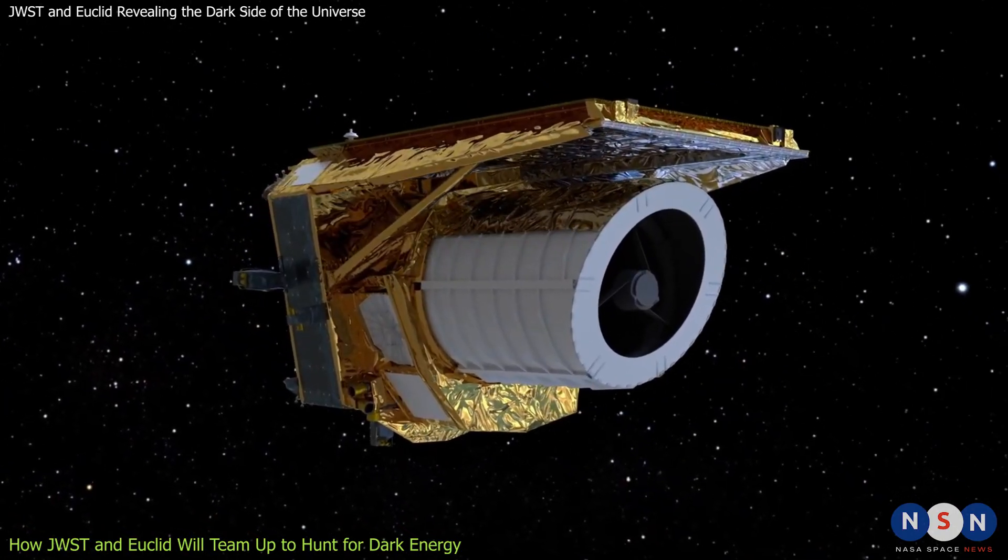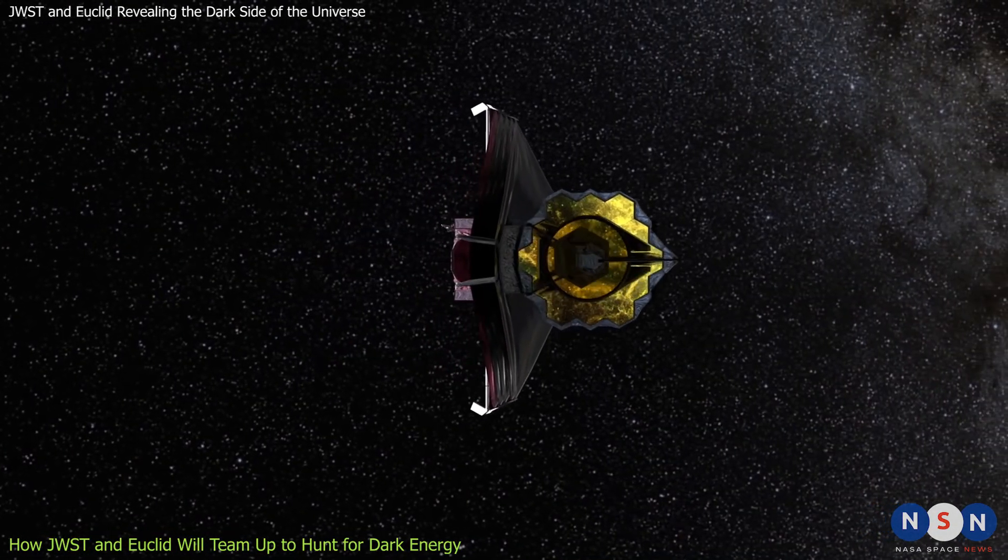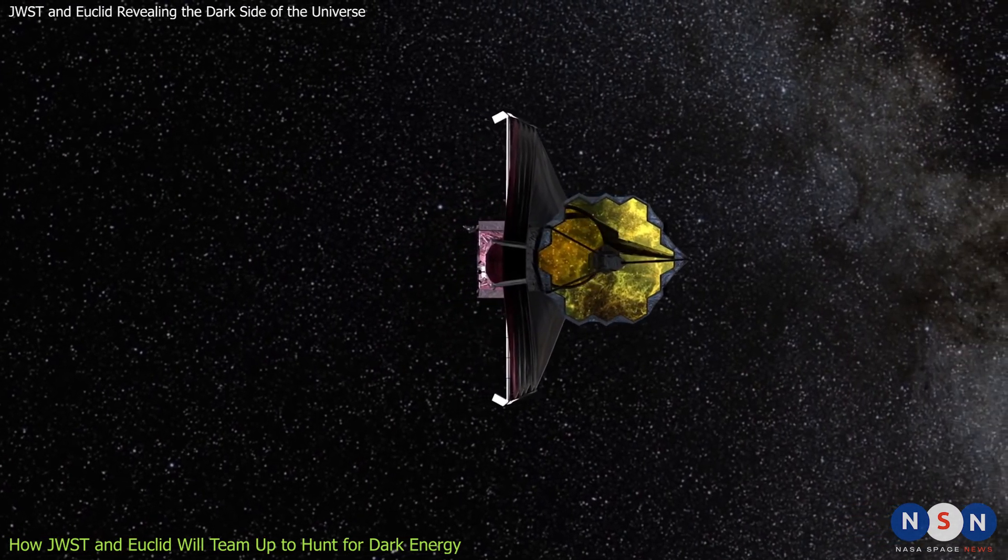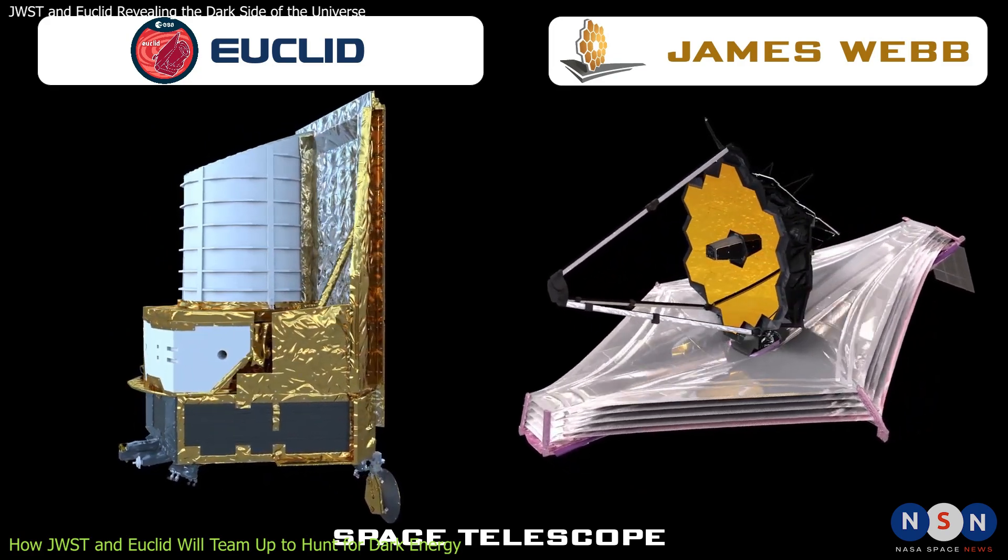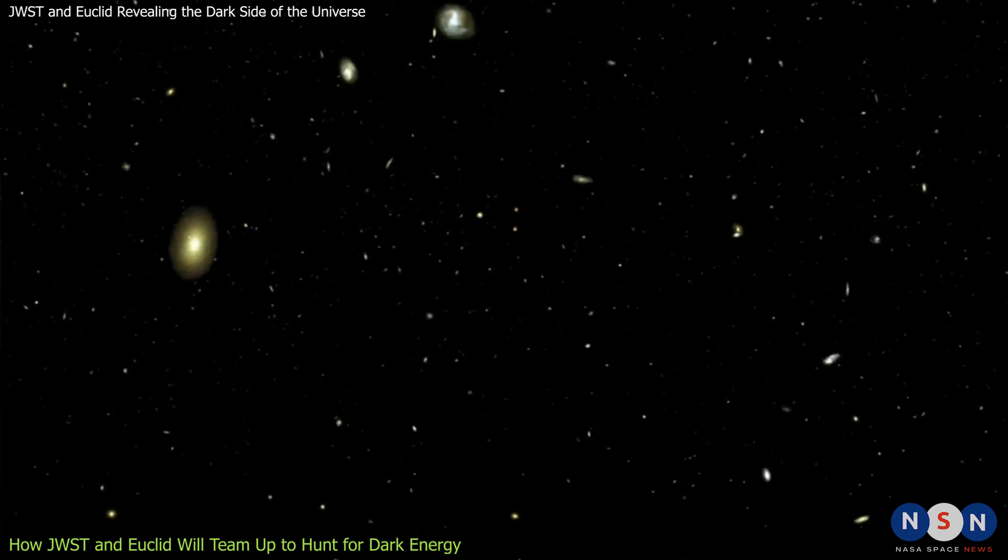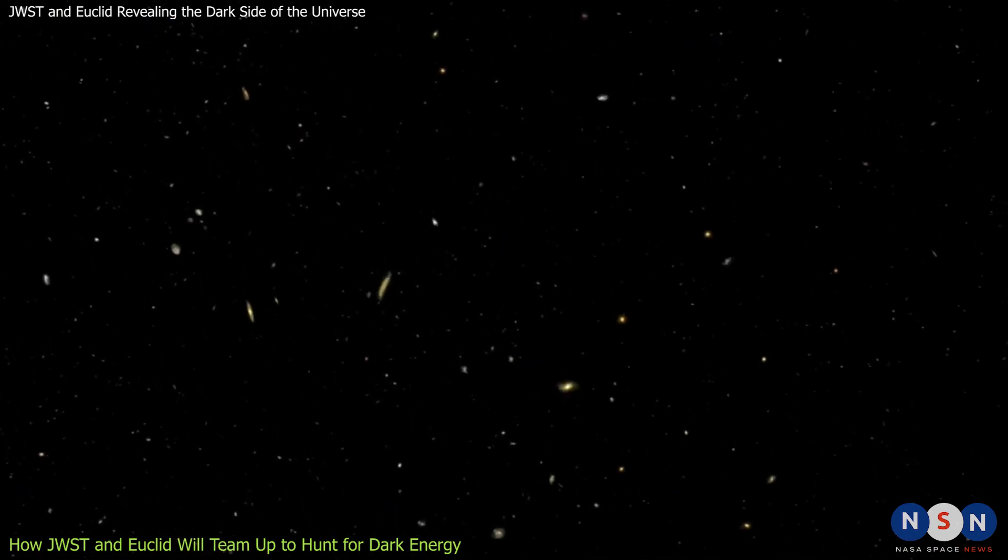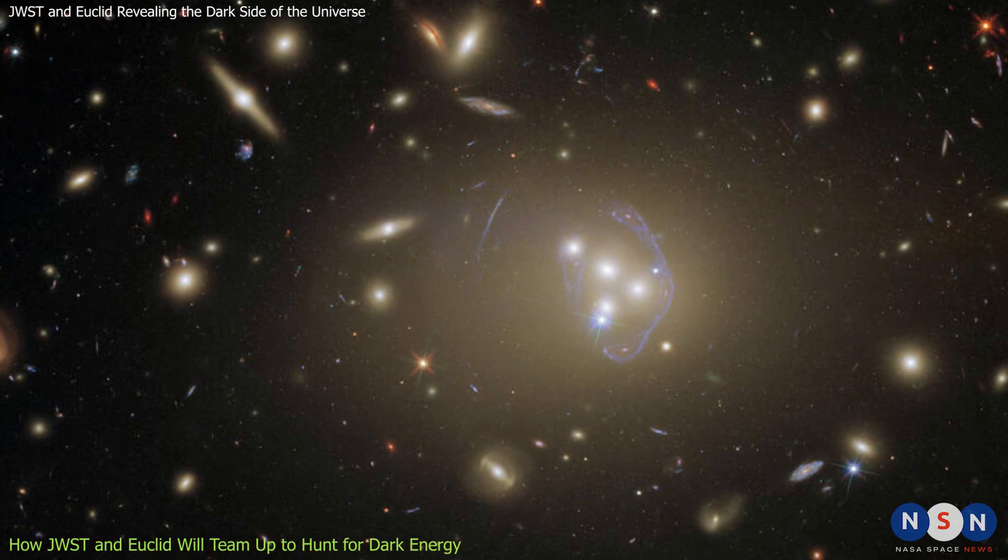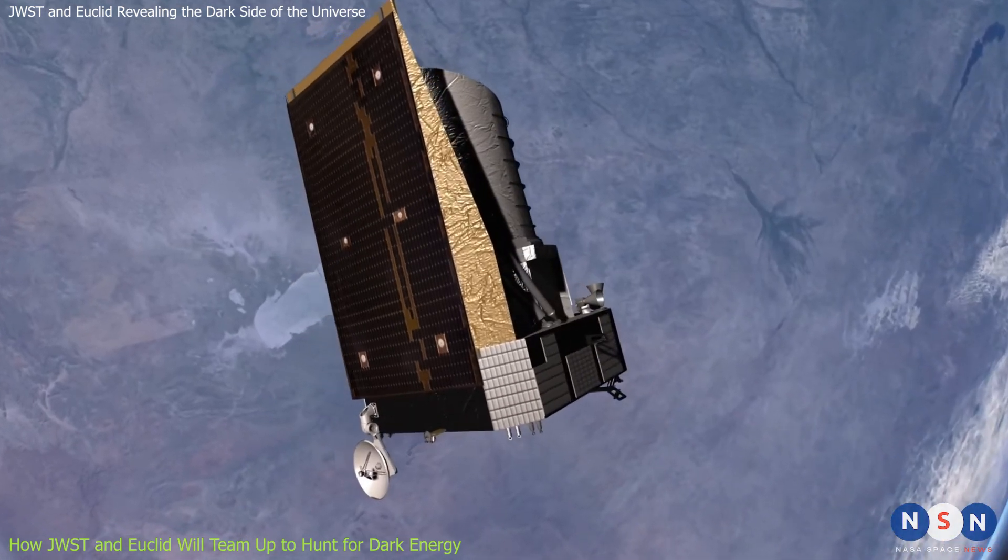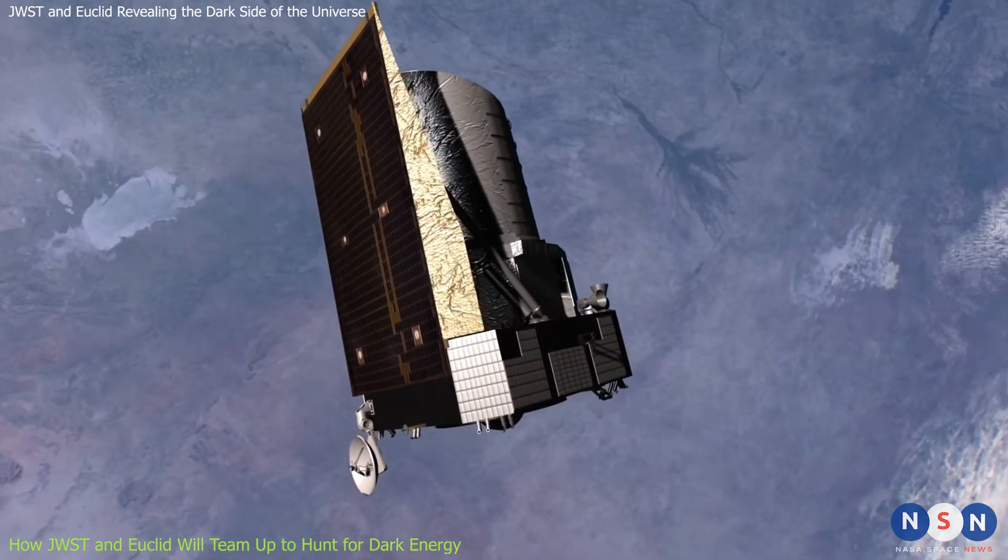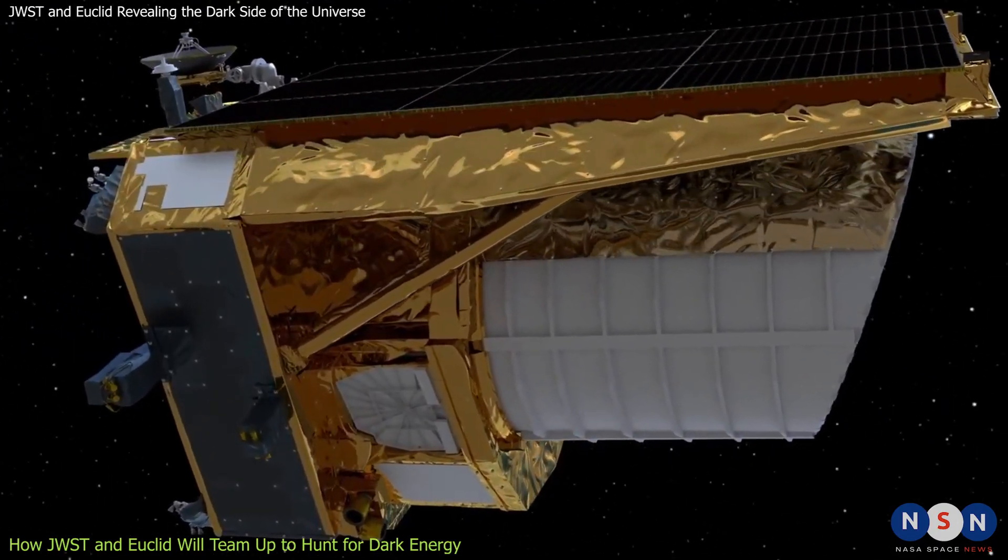But Euclid will not work alone. It will work together with JWST to achieve even better results. JWST and Euclid have complementary strengths and weaknesses. For example, JWST can observe deeper and farther than Euclid, but it has a smaller field of view and a lower resolution. Euclid can observe wider and sharper than JWST, but it has a lower sensitivity and a higher noise level.